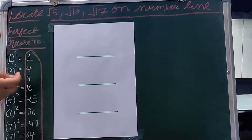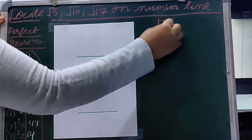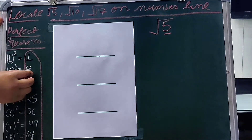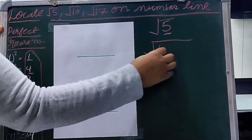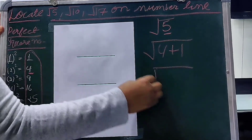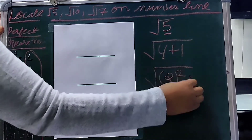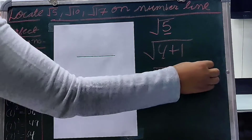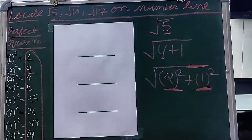The number which is nearest to the perfect square number, we can easily locate it on the number line. So let's start with root 5. As you can see, root 5 is nearer to 4, which is a perfect square number. So we can write root 5 as 4 plus 1. Root 4 is the square of 2, so we can write it like 2 squared plus 1 squared. Now we have two numbers, 2 and 1, which we will use to locate root 5 on the number line.